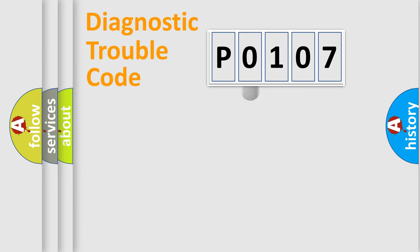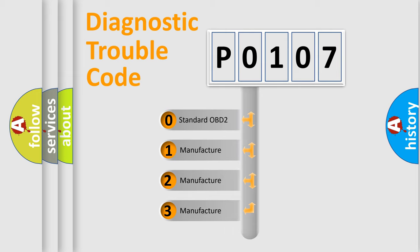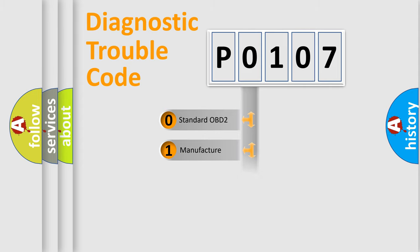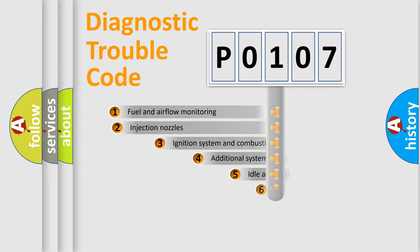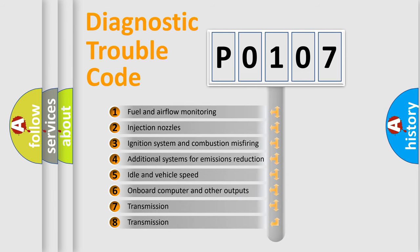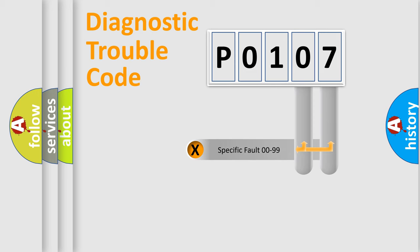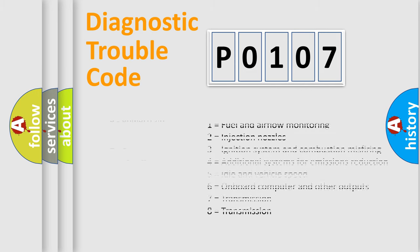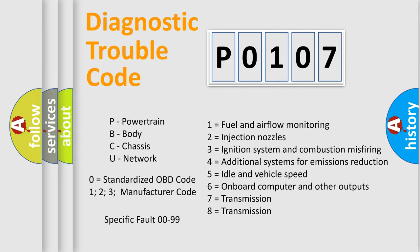This distribution is defined in the first character of the code. If the second character is expressed as zero, it is a standardized error. In the case of numbers 1, 2, or 3, it is a manufacturer-specific error expression. The third character specifies a subset of errors. This distribution is valid only for the standardized DTC code, and only the last two characters define the specific fault of the group.